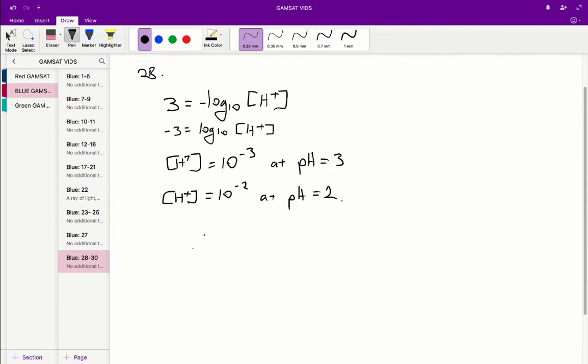If you do the same calculation using the pH formula for pH equals 2, you'll find that the concentration of hydrogen is equal to 10 to the negative 2. So therefore when we go from a pH of 3 to a pH of 2, our concentration of hydrogen increases by 10 times.